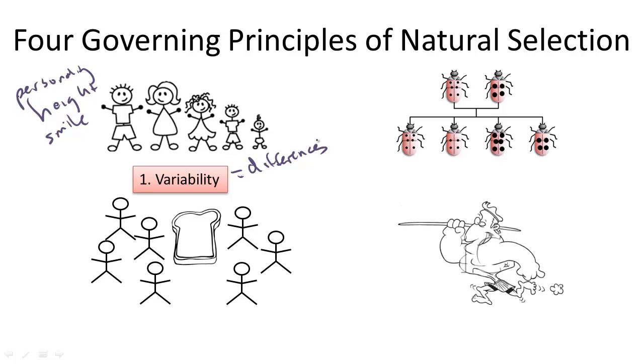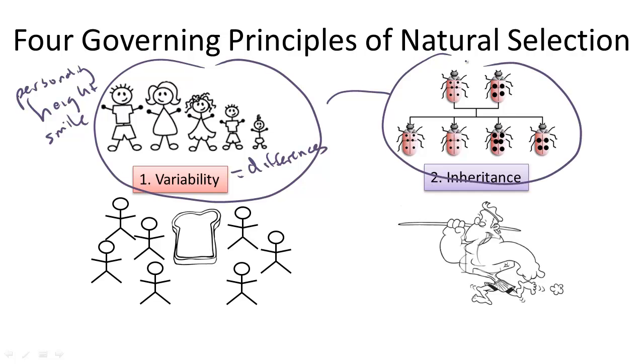He said that these differences that exist naturally in the population are also inheritable. Meaning that these differences, like in stripes or in spots of these ladybugs, or immunity to a disease, these can be passed down from generation to generation. So these are two very important differences between Darwin and his predecessors, like Lamarck or Aristotle, who thought that either traits were fixed throughout a lifetime, or that people attempted to have differences, not that they were just naturally occurring. And Darwin really knew nothing about genes or mutations just yet. So this was important for his time.